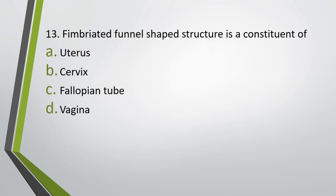Question number thirteen. Fimbriated funnel-shaped structure is a constituent of: uterus, cervix, fallopian tube, or vagina. Correct answer is option C — fallopian tube. The function of the fimbriated funnel-shaped structure is to catch the ovum which is released by the ovary.